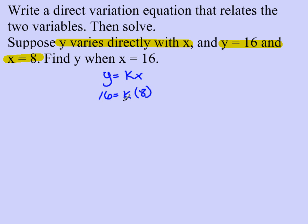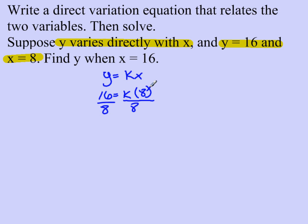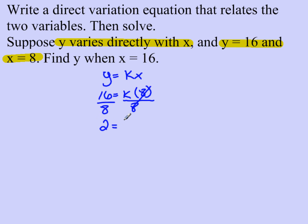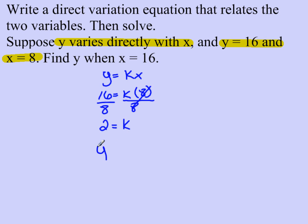I'm going to get k by itself by dividing both sides by 8. These cancel. 16 divided by 8 is 2. So now I know that my constant of variation k is 2. And then I write my equation y equals 2x.